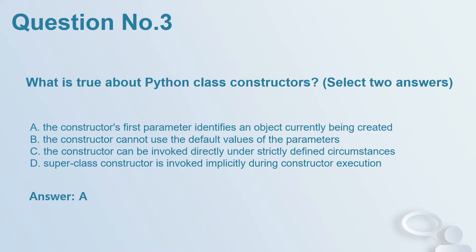Question number 3. What is true about Python class constructors? Select two answers. A. The constructor's first parameter identifies an object currently being created. B. The constructor cannot use the default values of the parameters. C. The constructor can be invoked directly under strictly defined circumstances. D. Superclass constructor is invoked implicitly during constructor execution. Answer: A.